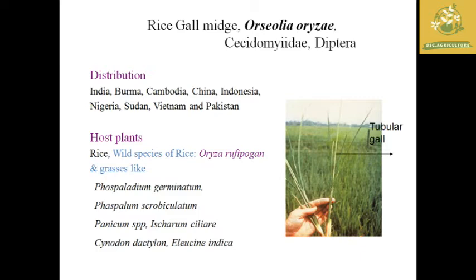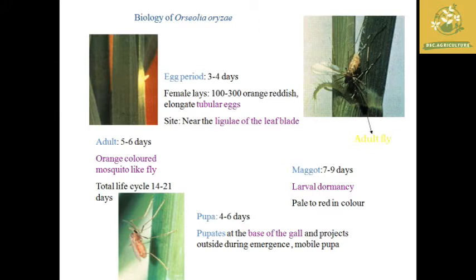Some wild host plants and wild species of rice such as Oryza rufipogon and grasses like Panicum species and Cynodon dactylon also act as hosts for gall midge. Biology: egg period is around 3 to 4 days. The female lays 100 to 300 reddish, elongated, tubular eggs at the site of the leaf blade. The maggot has a life period of 7 to 9 days. Larval dormancy occurs in unfavorable conditions.